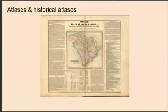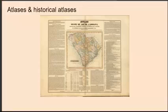An atlas is a bound collection of maps. Many atlases also tell you geopolitical, social, religious, and economic statistics. Historical atlases are especially useful because they tend to plot historic towns and landmarks more accurately than old maps do when it comes to jurisdictional boundaries and geographic features.